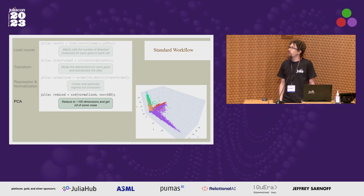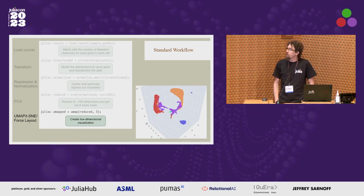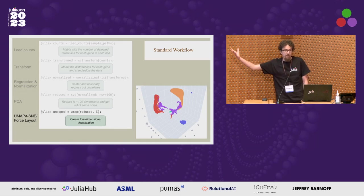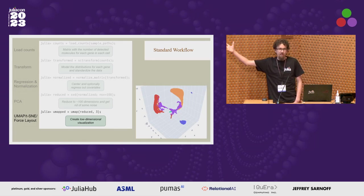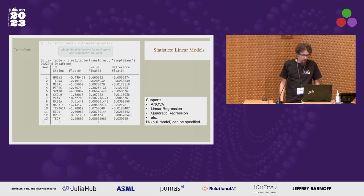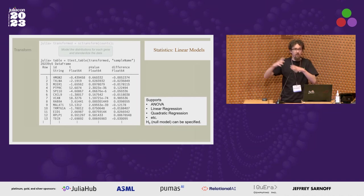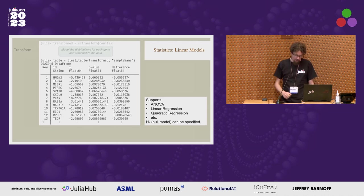After dimensionality reduction, the data is suddenly something we can really work with. For visualization, 100 dimensions is still messy, so people typically use UMAP, t-SNE, or a force layout to produce a 2D visualization — though I wouldn't recommend doing analysis at that level. You also typically want to do differential expression analysis: how is this patient different from another, how is one cell type different from another.